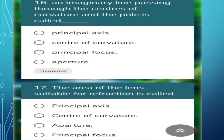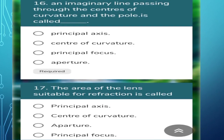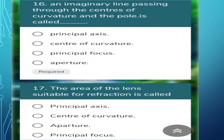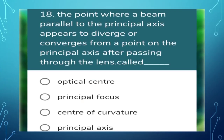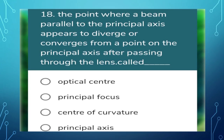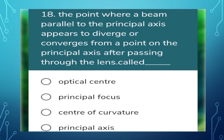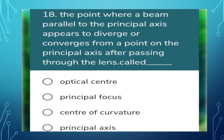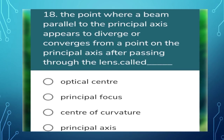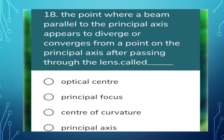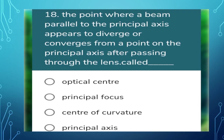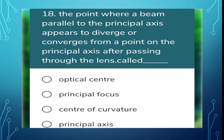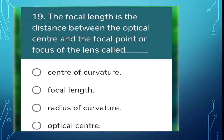The 17th question: the area of the lens suitable for refraction is called? That is called the aperture. Next question: the point where a beam parallel to the principal axis converges or appears to diverge from on the principal axis after passing through the lens is called? That is called the principal focus.